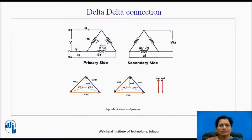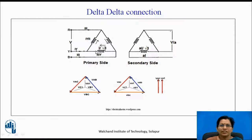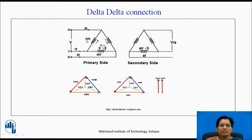Now let us discuss about the delta-delta connection. Primary is connected in delta and secondary is connected in delta. These are the three phases and these are the three lines. Three line voltages are equal and three phase voltages are equal for a balanced system, and the line voltage and phase voltage for this delta are the same.